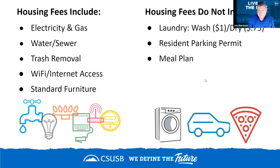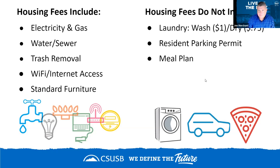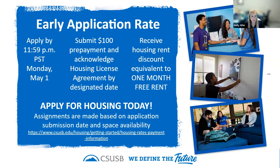Just a little about applying for housing — the application is open right now, it's been open since February 1st. We really encourage you, if you're interested in living on campus, to apply early to be considered for the early application rate. If you apply by 11:59 PM on Monday, May 1st, you would receive that early application rate, which is equivalent to about a month of free rent — a pretty significant discount. You would also need to submit your $100 prepayment and acknowledge the housing license agreement by the designated date provided after you apply. Applying now doesn't lock you in, but it gives you that option to live on campus, as housing assignments are made based on submission date and space availability — first come, first served.